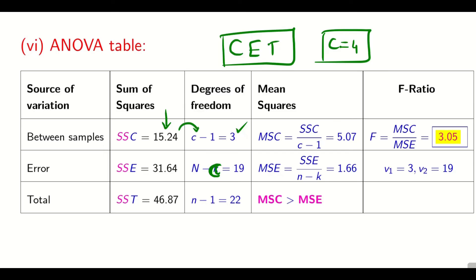Now, mean square: this divided by this, this divided by this. Now also in this problem, as like the previous one, MSC is bigger than MSE. So this is going to be my numerator, and my numerator degree of freedom is 3. And my denominator is going to be MSE, and the corresponding degree of freedom is 19.